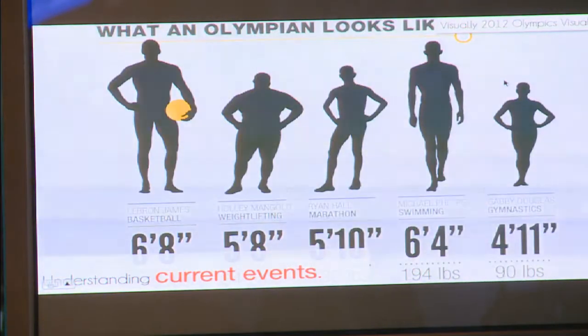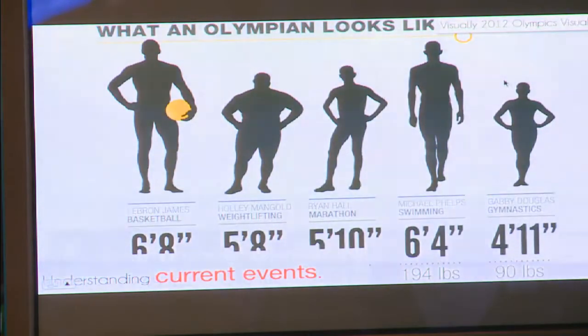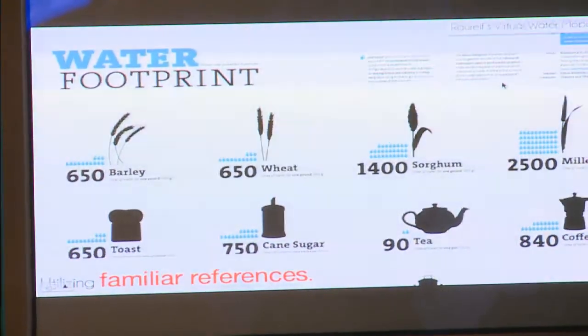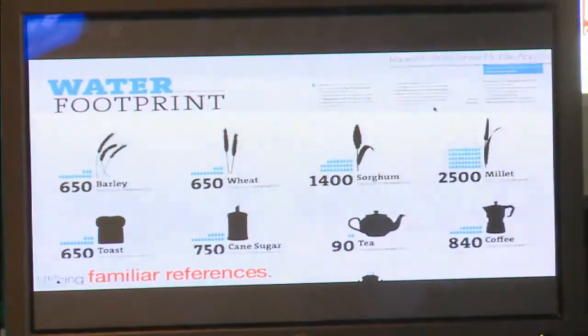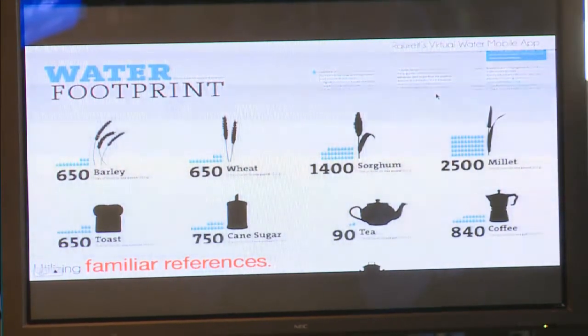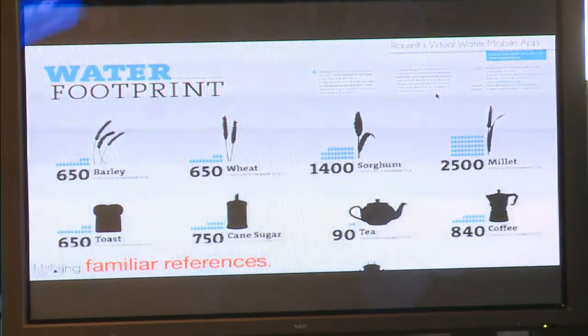There are some really good examples. For instance, this is from the 2012 Olympics, which compares several athletes from different disciplines — their physique, weight, and height — and it's quite effective and entertaining. This is another recent data visualization from Rauwreif, a German-based company, which shows the water footprint of several products using familiar references. You can immediately see, for instance, how much water it takes to make a cup of tea — really effective, entertaining, and useful.